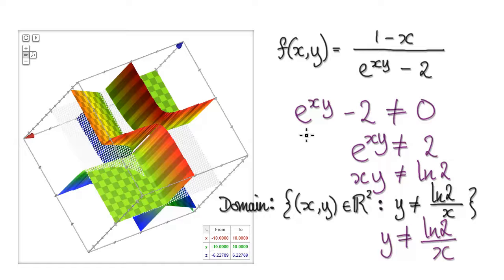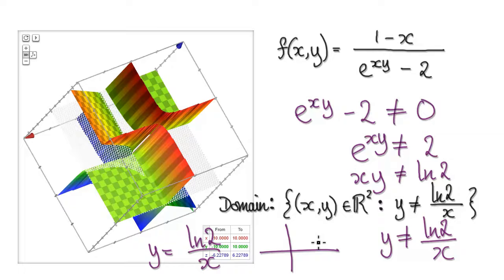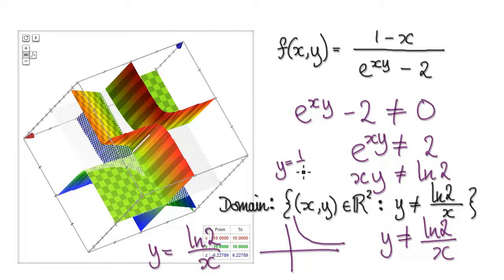Let's rearrange to make y the subject: y cannot be ln(2) over x. Let's sketch this graph. It will look something like this — it's just a constant over x, so it's very similar to y equals 1 over x.